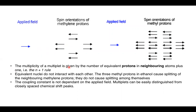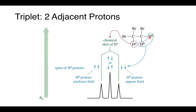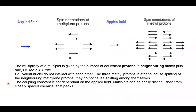The multiplicity of a multiplet is given by the number of equivalent protons in neighboring atoms plus one — the N+1 rule. Equivalent nuclei do not interact with each other. The three methyl protons in ethanol cause splitting of the neighboring methylene protons, but do not cause splitting among themselves. The coupling constant is not dependent on the applied field, so multiplets can be easily distinguished from closely spaced chemical shift peaks.